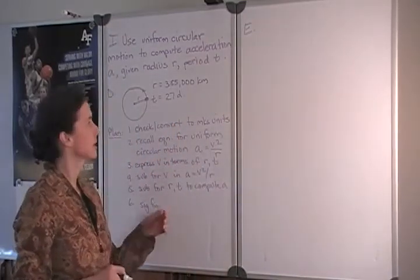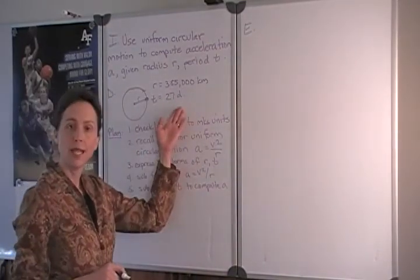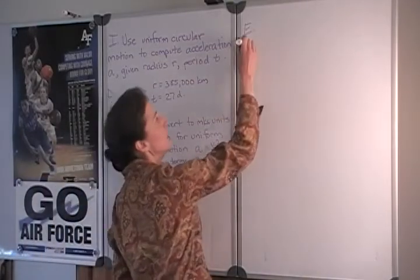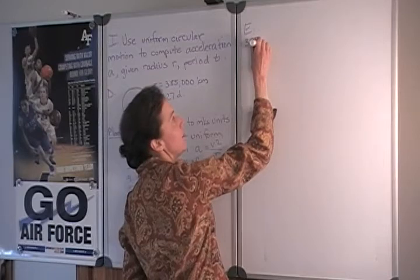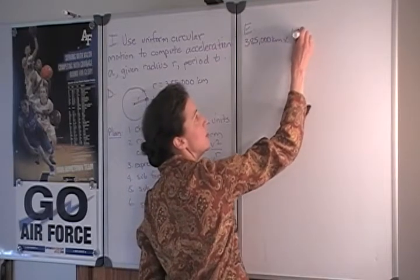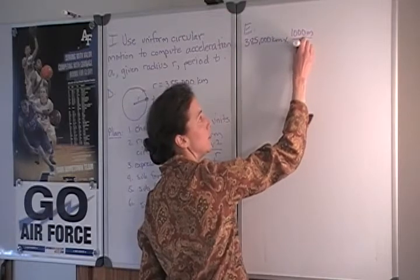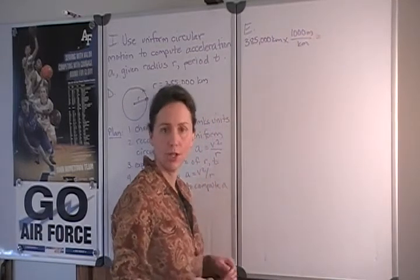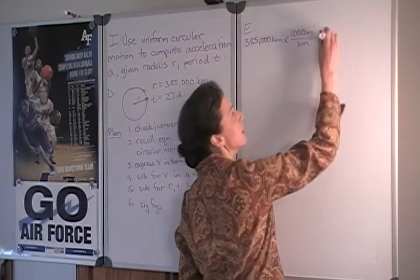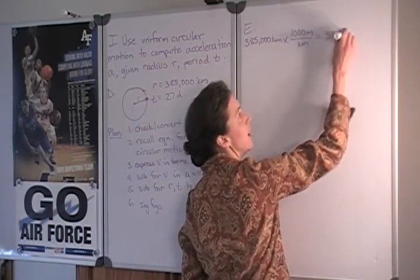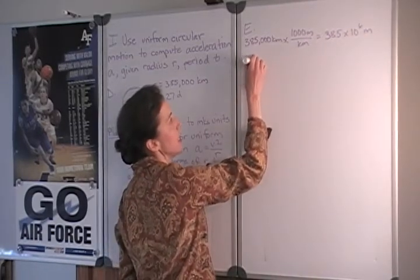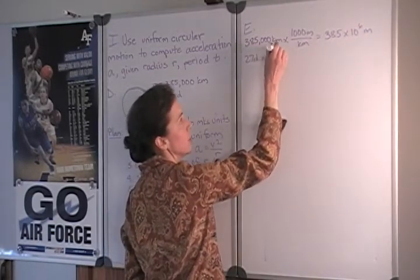Let's take a look at our units. Units of kilometers and days are not MKS units so both of those values will have to be converted. If we have 385,000 kilometers times a thousand meters per kilometer this yields a large number so I'm going to use scientific notation to make it more compact 385 times 10 to the sixth meters.